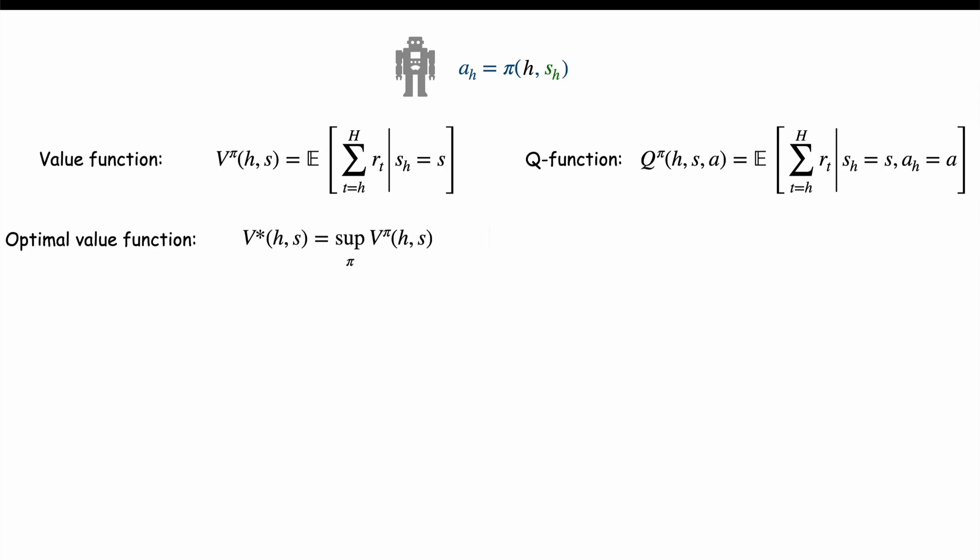In today's paper, the agent has a deterministic strategy that is a function pi and chooses action AH as pi of H SH. The value function is the expected cumulative reward of the agent starting at time H from state S. The Q function is the expected cumulative reward of the agent starting at time H from state S and with action A. So the Q function differs from the value function by the choice of the first action A. The optimal value and Q functions are the best possible values of V and Q achieved by the best possible strategy pi star.